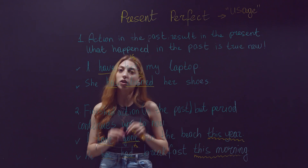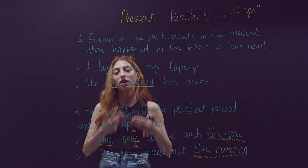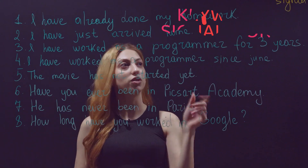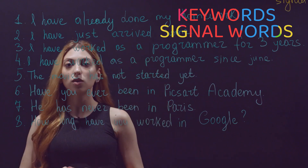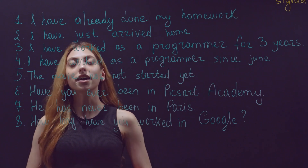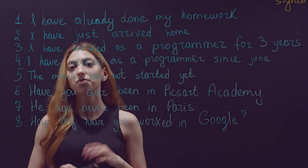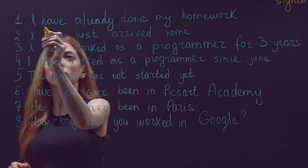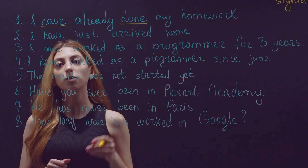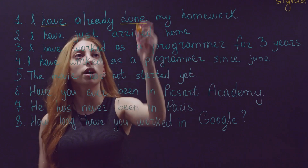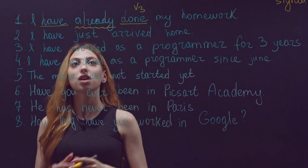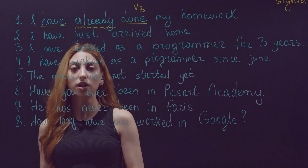Now let's go to the keywords, or signal words, which can help us identify or form correct present perfect tense. Let's read each example and I will explain each keyword. First: 'I have already done my homework.' The present perfect structure is 'have + done' — done is the third form of 'do': do, did, done. The keyword here is 'already'. I finished my homework and the result is it is done.